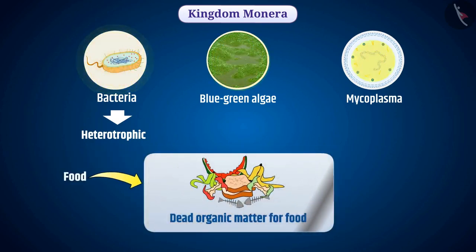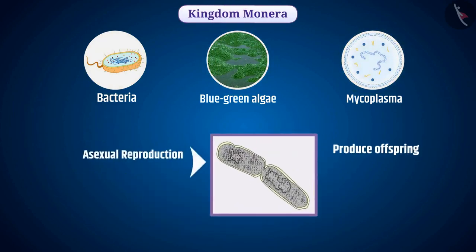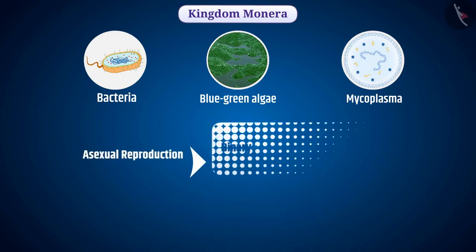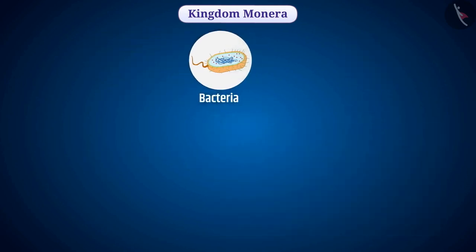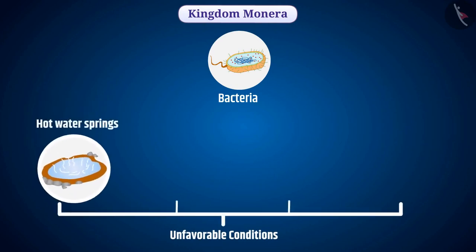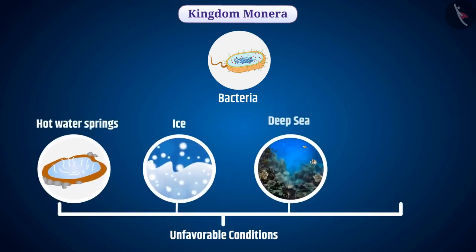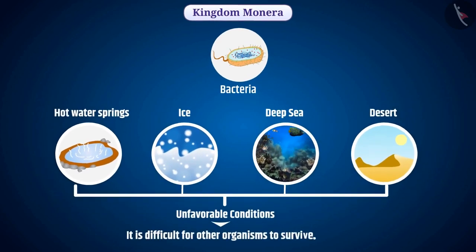Organisms of the Monera kingdom produce offspring through asexual reproduction, mainly by binary fission and budding. Bacteria are found in almost all places, including extreme and unfavorable conditions such as hot water springs, ice, deep sea and desert, where it is difficult for other organisms to survive.